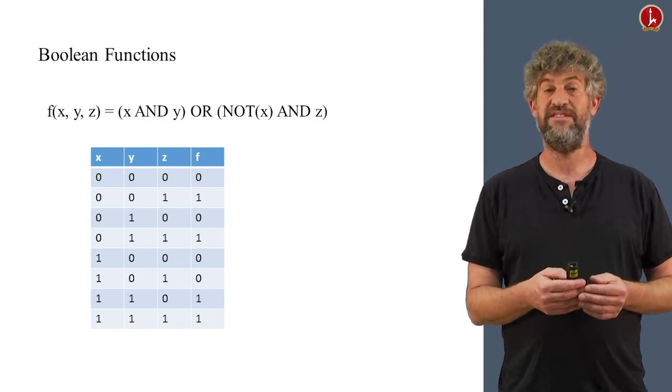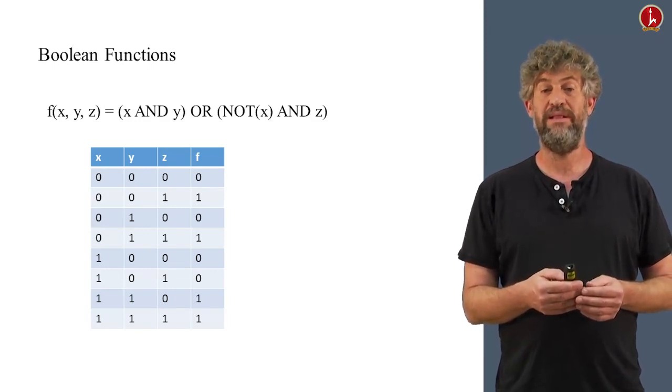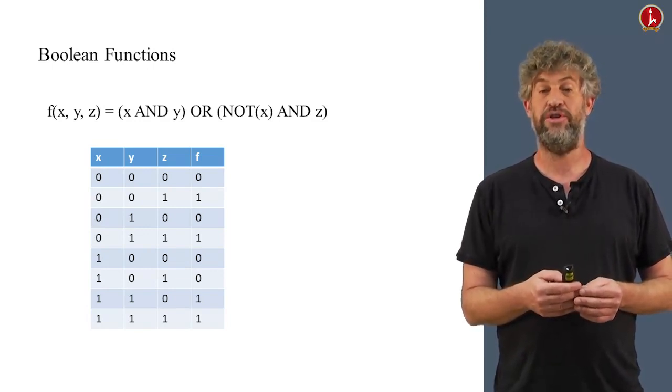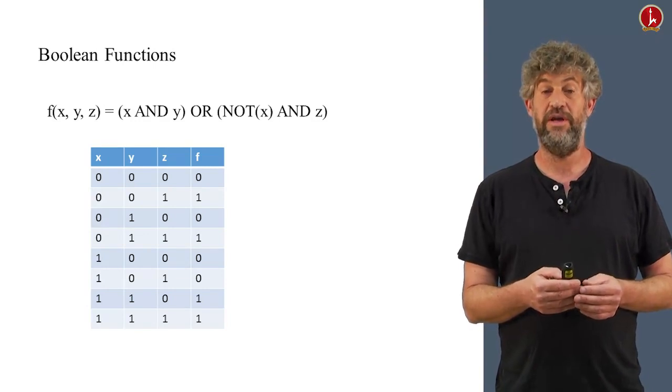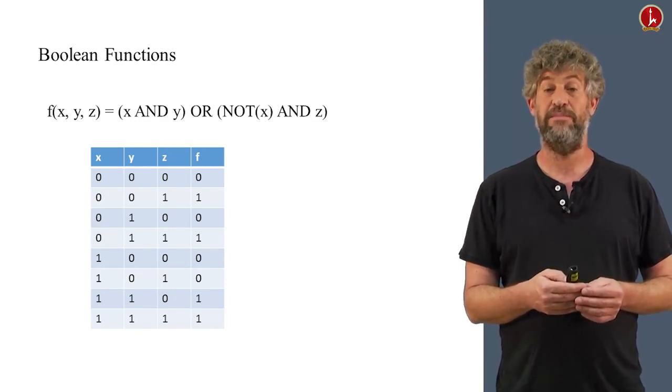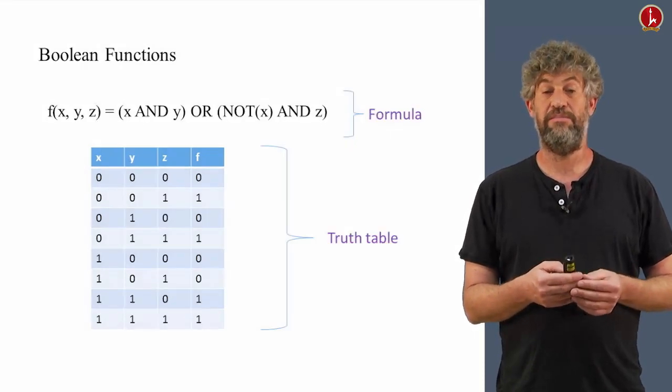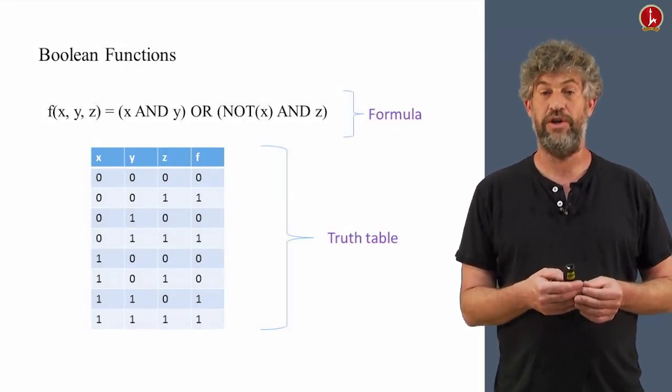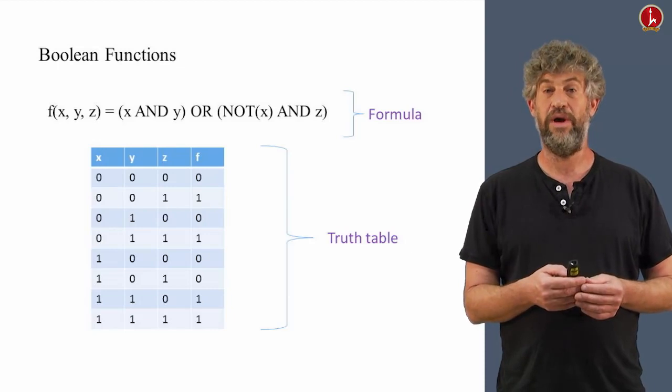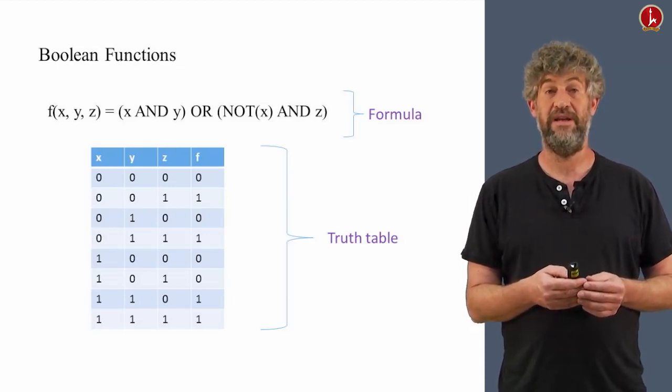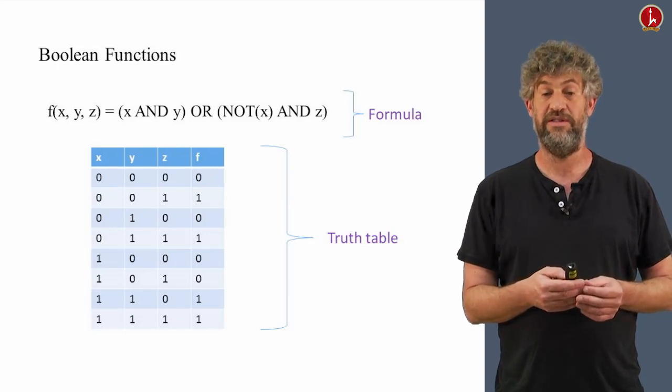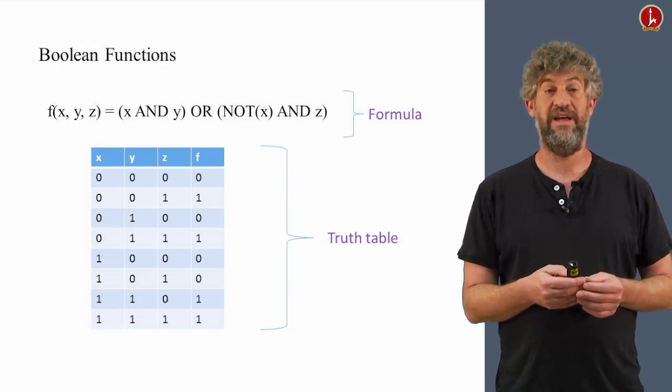And now notice that this table of values completely gives you the same information as the previous expression did. It completely specifies the function, the Boolean function that we just had. The first way we describe the function was as a formula. The second way we describe the function was as a truth table. And these are two completely identical definitions, ways to describe the same Boolean function.